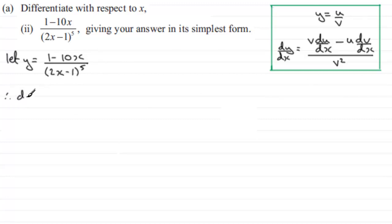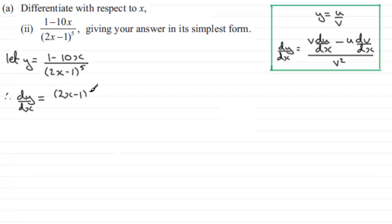Moving on, dy/dx equals — according to the quotient rule we start with the bottom of the fraction, which is (2x minus 1) to the power 5, and multiply it by the differential of the top. Differentiating (1 minus 10x) with respect to x gives us minus 10.